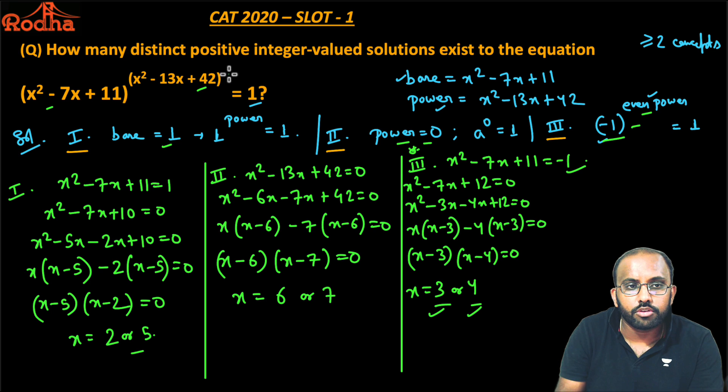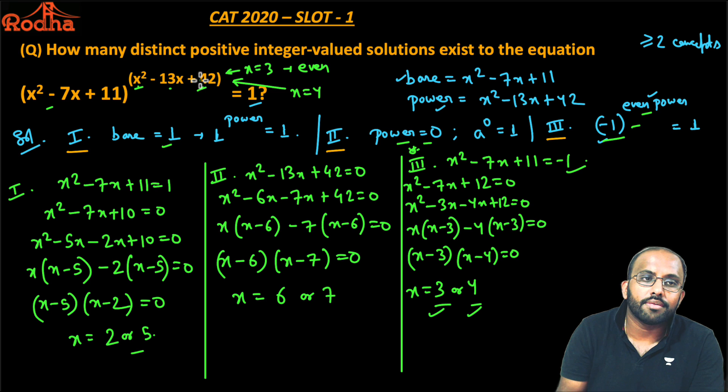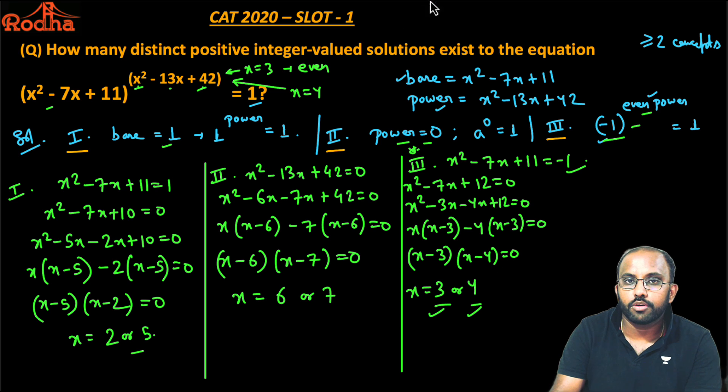I need to check that at 3 or 4, the power value is even. If I put x = 3: 3² is 9, minus 39 is even, and even plus even is even, so x = 3 gives an even number. At x = 4: 4² is even, 13 × 4 is even, so even minus even is even, plus even is even. So at both 3 and 4, the power is even. Total 6 values can be accepted: 2 values from each case. So 6 is the answer.